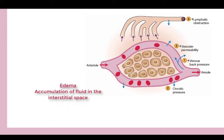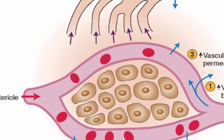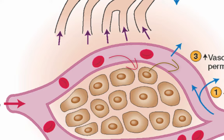Blood arrives to the tissue through blood vessels. We have the arterial system with continuous branching until we reach the very small arterioles, which give rise to the capillaries. Capillaries are the blood vessels in contact with the tissue, through which oxygen and nutrients pass to the cells. Carbon dioxide and waste products also enter the blood, which then drains into the venous system.